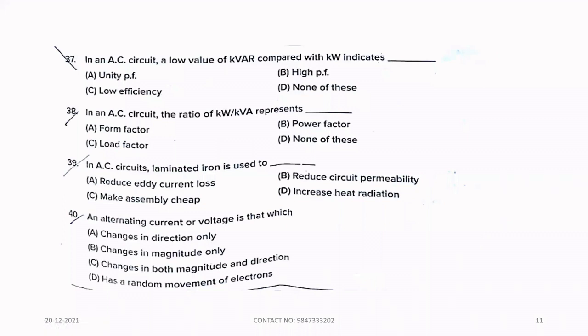Thirty-seven. In an AC circuit, a low value of Kvar compared with Kw indicates dash. High power factor. Option B is the correct answer. Thirty-eight. In an AC circuit, the ratio of Kw divided by Kva represents the power factor. Option B is the correct answer.